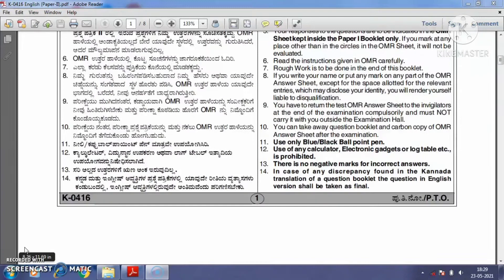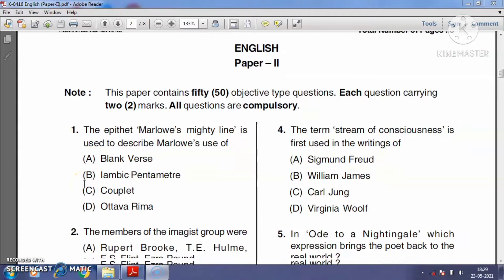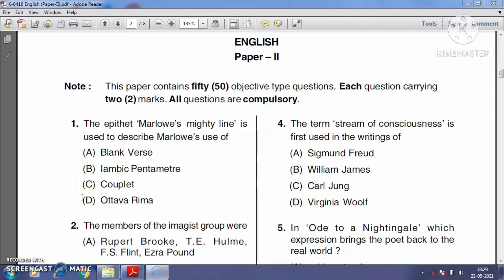Let me begin with the first question: The epithet 'Marlowe's mighty line' is used to describe Marlowe's use of blank verse, iambic pentameter, couplet, or Ottava Rima? Blank verse is a kind of poetry written in unrhymed lines, always in iambic pentameter. Christopher Marlowe was the first author to write blank verse in his writings, so the right answer is option A, blank verse.